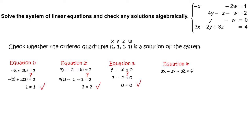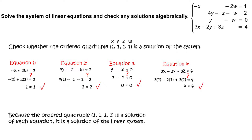Lastly, write equation 4: 3x minus 2y plus 3z equals 4. Substitute 1 for x, 1 for y, and 1 for z, and simplify to get 4 equals 4, which is a true statement, so the ordered quadruple is a solution of equation 4. Because the ordered quadruple (1, 1, 1, 1) is a solution of each equation, it is a solution of the linear system.